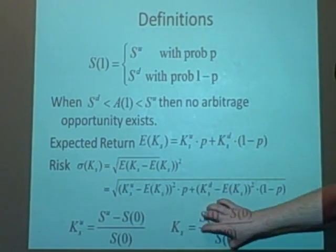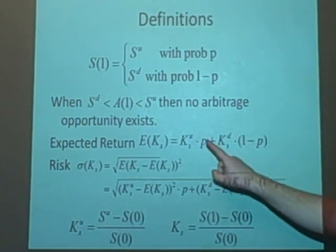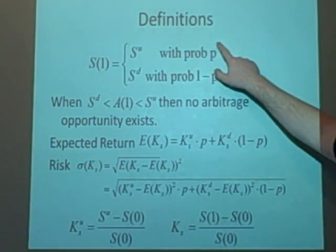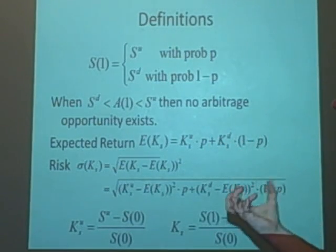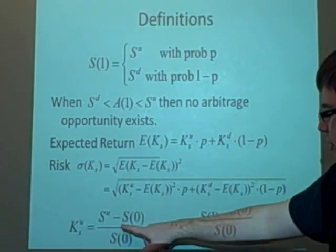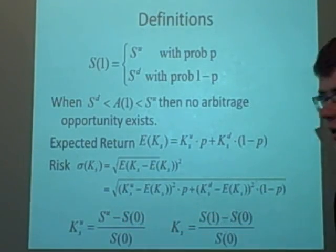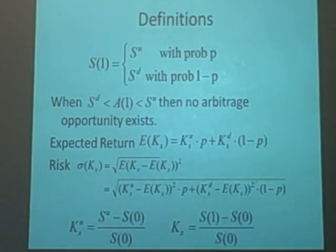So we're finding the expected of this value here, and this is the KUS times the P, times the P here, and then plus KDS, so we've got the lower value of DS, so this will be SD minus S0 over S0 times the 1 minus P, times the other probability here.